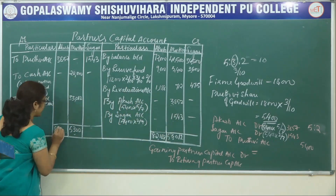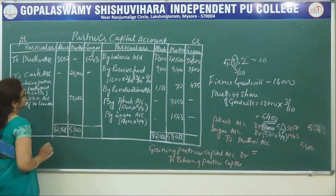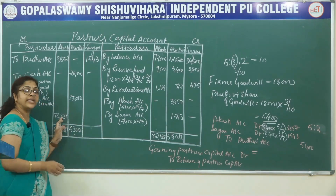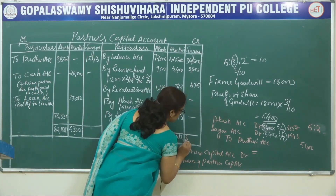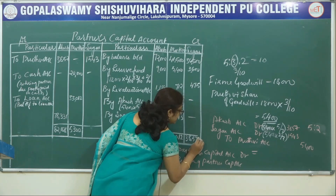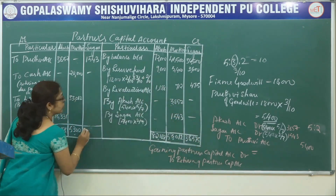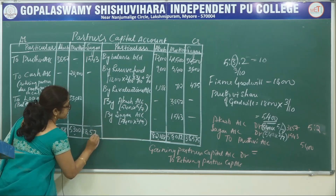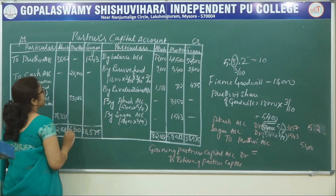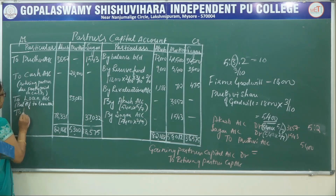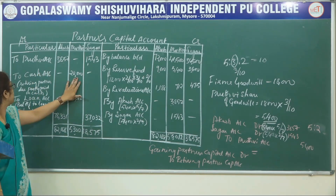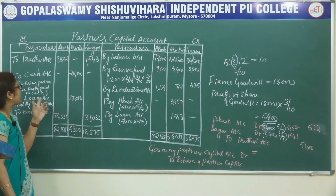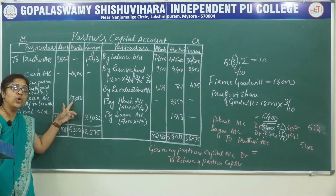Next, balance the capital accounts. Akash's account total is 82,188 — write the same total 82,188; the balance carried down is 78,331. The total of Sagar's account is 38,575 — write the same total 38,575; the balance carried down is the balance carried forward. The cash amount is partly paid to the retiring partner immediately and the balance amount is transferred to loan account.